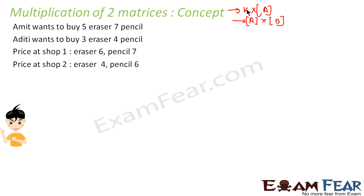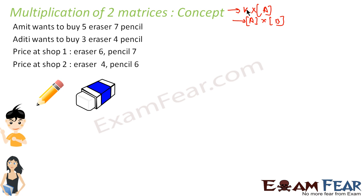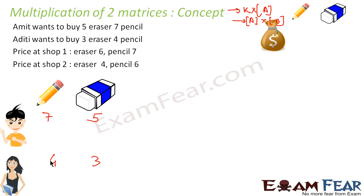Let's suppose there is a guy called Amit and a lady called Aditi. They want to buy some erasers and pencils. Amit wants to buy five erasers and seven pencils. Aditi wants to buy three erasers and four pencils. The price at shop one was six for erasers and seven for pencils. Shop two had four for erasers and six for pencils. A valid scenario where you want to compare costs across two shops.